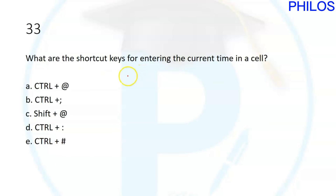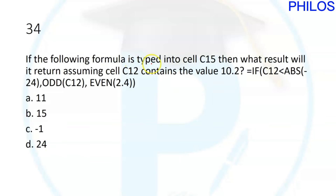Question thirty-three: what are the shortcut keys for entering the current time in a cell? The shortcut is Control+Colon (:). Note that the colon and semicolon share the same key — you get colon by pressing Shift+semicolon. So in practice you press Control+Shift+semicolon. For the current date the shortcut is Control+semicolon. For exams, the answer is Control+colon.